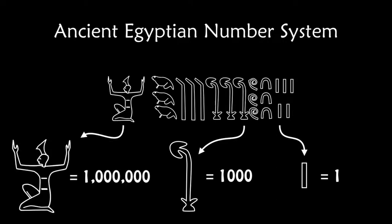We use the symbol 1 to describe 1, 1,000, and 1,000,000. And I'm sure if there was an ancient Egyptian in the crowd, they would be going: why on earth would you use the same number 1 to describe having 1,000,000 of something, which sounds great, and having just 1 of something, which sounds pretty meager?